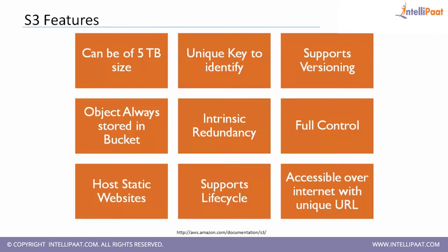One object can be a maximum of 5 terabytes in size. Each object has a unique key to identify it. S3 supports versioning — if you upload ABC.jpeg and have versioning enabled, uploading a new ABC.jpeg will not delete the previous one; it creates a new version, and you can retrieve whichever version you want. Objects are always part of a bucket — they cannot exist independently. S3 follows intrinsic redundancy, which is an important concept. The owner has full control over an object and can also grant full control to someone else.